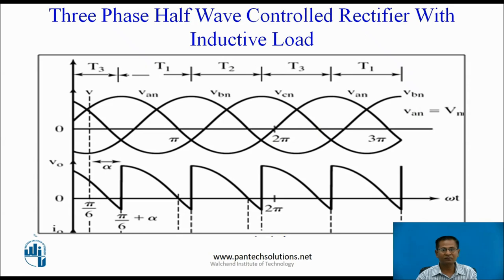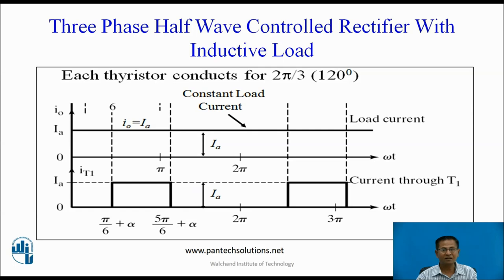These are the waveforms for alpha equal to 90 degree. These are the current waveforms for different values of alpha. Since the load is highly inductive, the current flows through the converter continuously, and each thyristor conducts for 120 degrees. T1 conducts from pi by 6 plus alpha to 5 pi by 6 plus alpha; T2 conducts from 5 pi by 6 plus alpha to 9 pi by 6 plus alpha; and T3 conducts from 9 pi by 6 plus alpha to 13 pi by 6. In this way, current flows through the converter continuously.